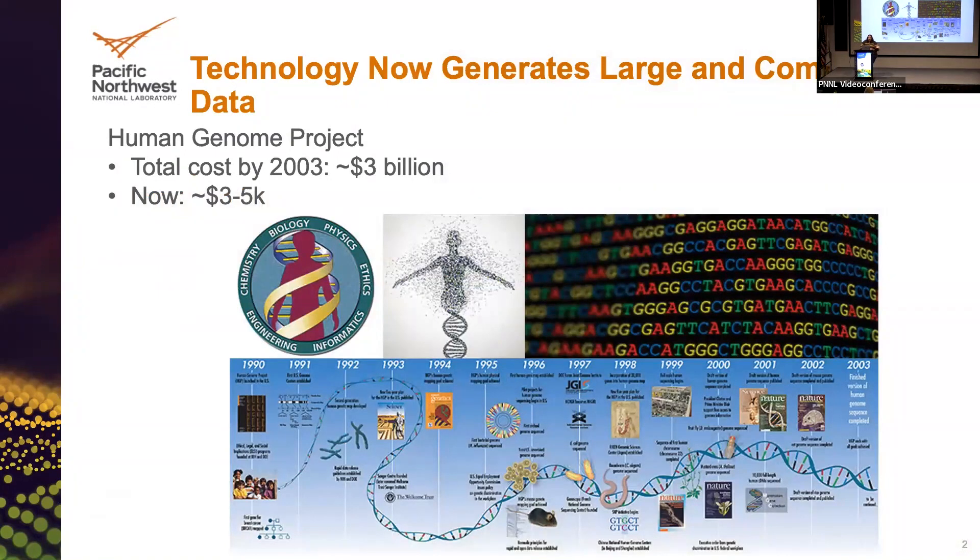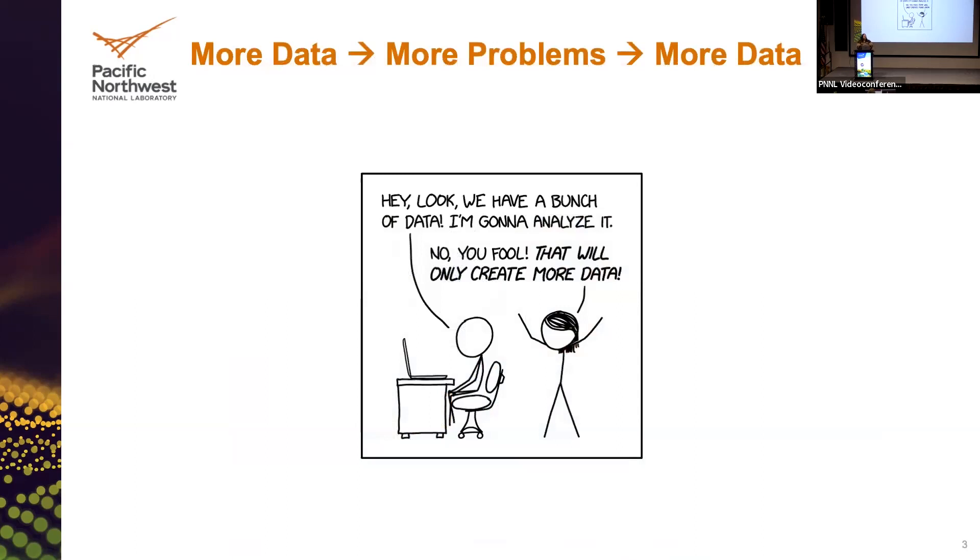It's not a surprise, as the technology has now gotten better, we're able to generate large and complex data. Some of you may even know the Human Genome Project took 20-some-odd years. It cost $3 billion to sequence one human genome. And now you can deposit your sample and get a full genomic workup for $3,000 to $5,000. Because things become cheaper, we said, oh, we should just generate more data. We'll learn more that way.